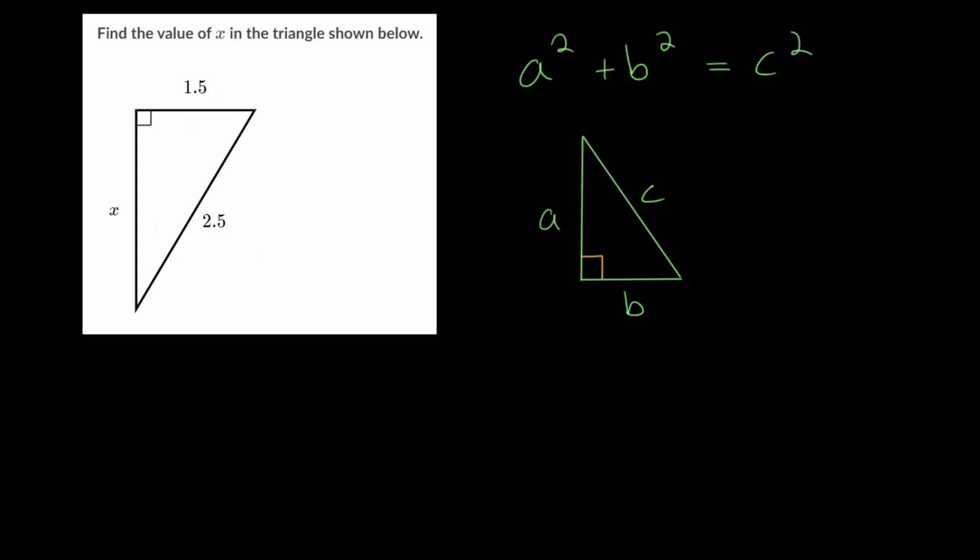So when solving these problems, we just need to label what A, B, and C are. And remember, A and B are the legs of the triangle that are next to this right angle. And it doesn't matter which we call which. We can call this A, and we can call this one B, or we can switch that.